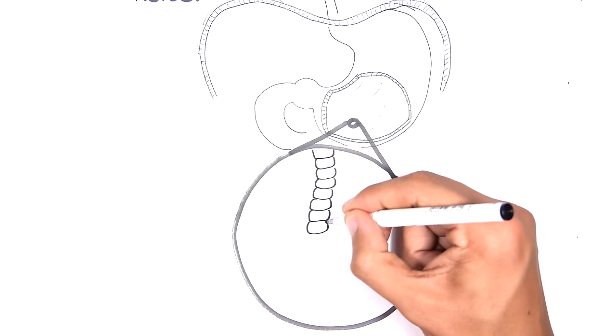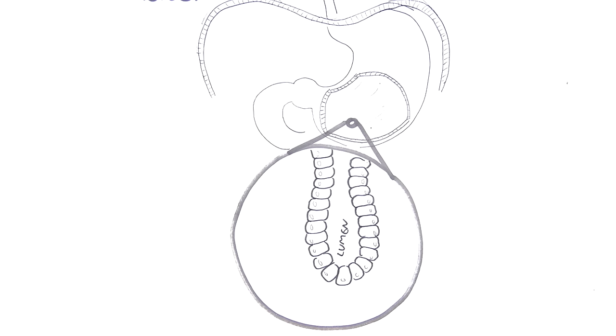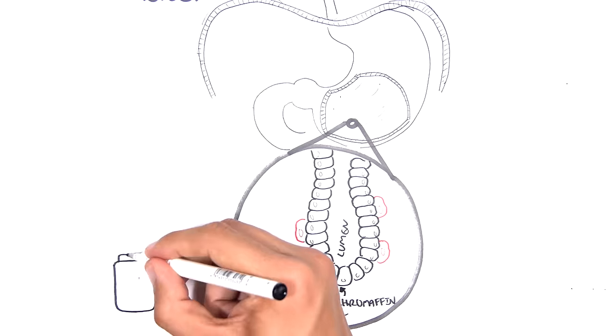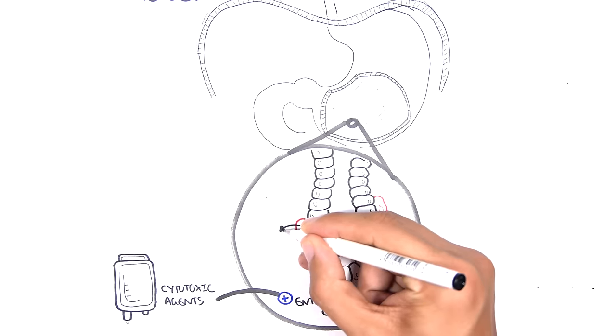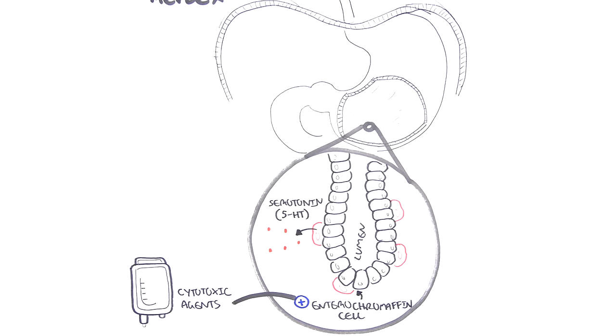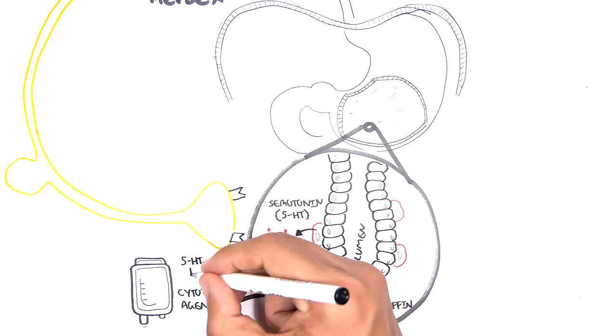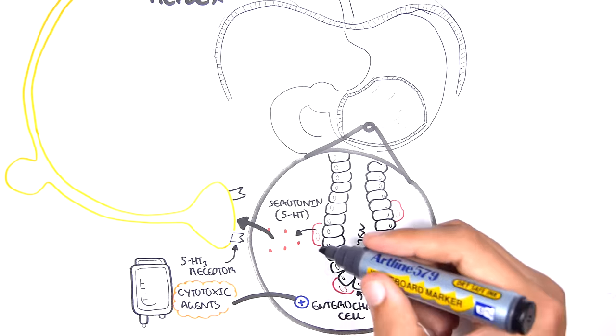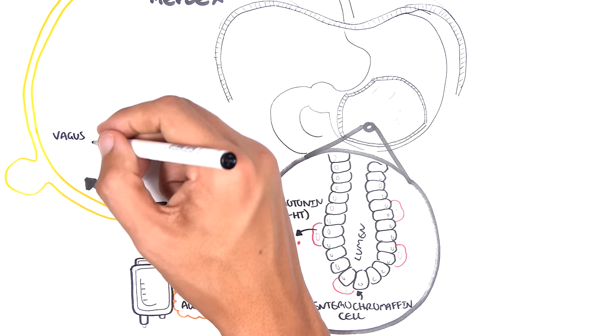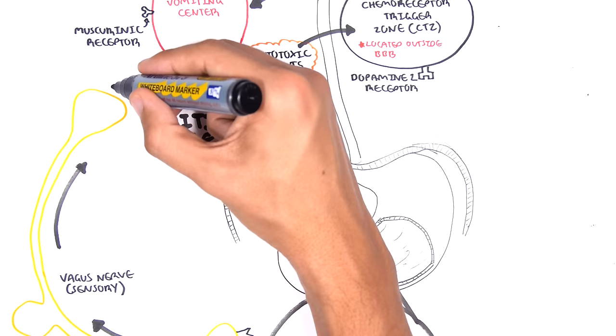If we zoom into the stomach, we can see they form deep pits and glands, and these are lined by many different types of cells, one of which are called enterochromaffin cells. The enterochromaffin cells release serotonin in response to cytotoxic agents, which is thought to stimulate 5-HT3 receptors on sensory nerve fibers around the area. Stimulation of this sensory nerve fiber, which is actually the vagal nerve, will bring this information to the vomiting center to trigger the vomiting reflex.